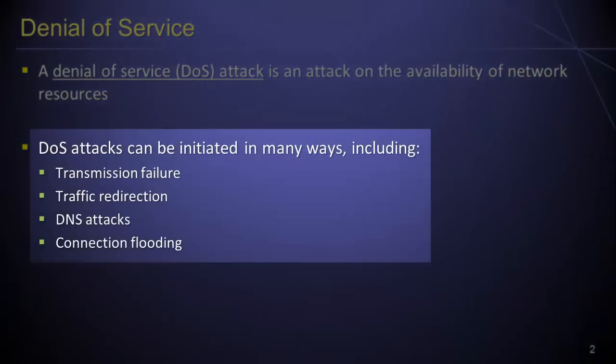Denial of service attacks can be initiated in many different ways. First, a malicious party might cause a transmission failure by physically severing or otherwise interfering with the connection between an information asset and a legitimate user. Alternatively, a malicious party might physically sever or otherwise interfere with the intermediary systems or connections between an information asset and a legitimate user.